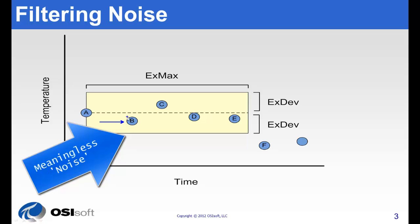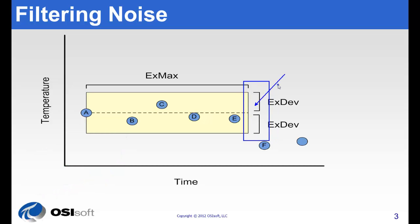And fortunately, the PI system gives us an option through exception to filter these out and not burden our network traffic or our PI server's performance with them.